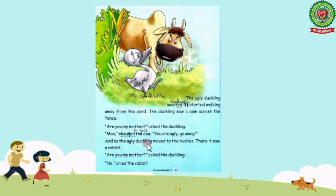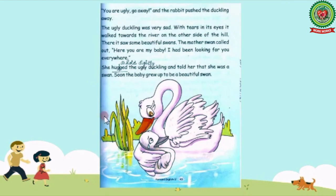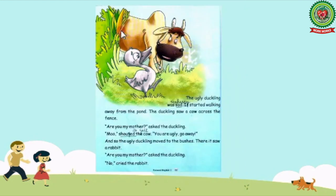And so the ugly duckling moved to the bushes. There it saw a rabbit. Are you my mother? asked the duckling. No, cried the rabbit. You are ugly, go away. And the rabbit pushed the duckling away.